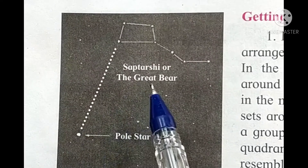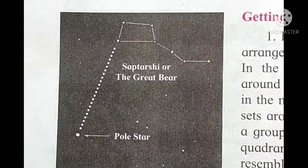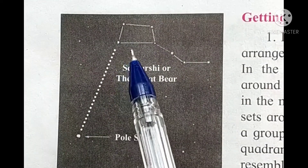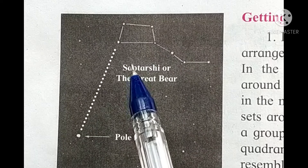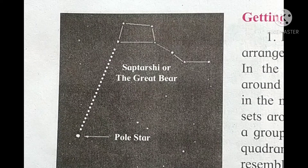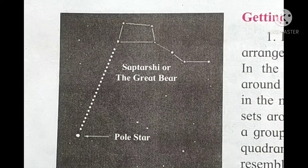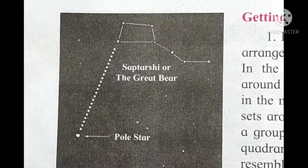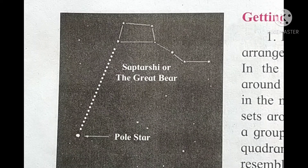Saptarshi is a group of seven bright stars. It is in the shape of a quadrangle with a tail made up of three stars, and the resemblance to a kite can be easily recognized. It is best visible in the sky around February.